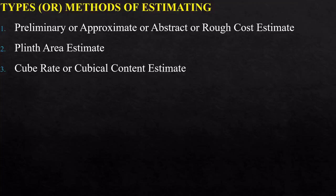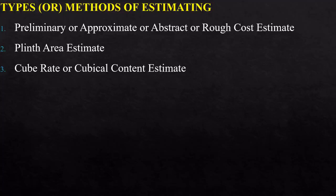Next is cube rate or cubical content estimating. This cubical rate estimate is also a preliminary or approximate estimate. It is prepared on the basis of cubical contents of the building and the cubical rate — that is, what is the rate for one cubic meter? That is the cubical rate estimate — estimating per cubic unit of the material or resources.